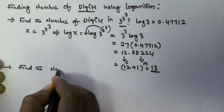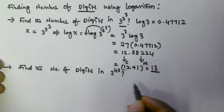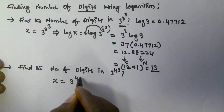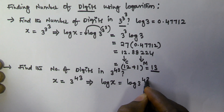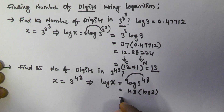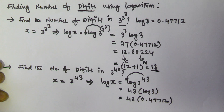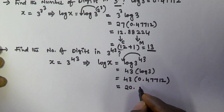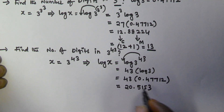Find the number of digits in 3 to the power of 43, where log 3 value is 0.47712. Let us assume x is equal to 3 to the power of 43. Apply log on both sides: log x is equal to log 3 to the power of 43, so 43 will come to the front — that means 43 into log 3. Substituting the value of log 3: 43 into 0.47712. When we multiply, we get 20.51616. So the number of digits is found by adding 1 to the characteristic. Here 20 is the characteristic value.